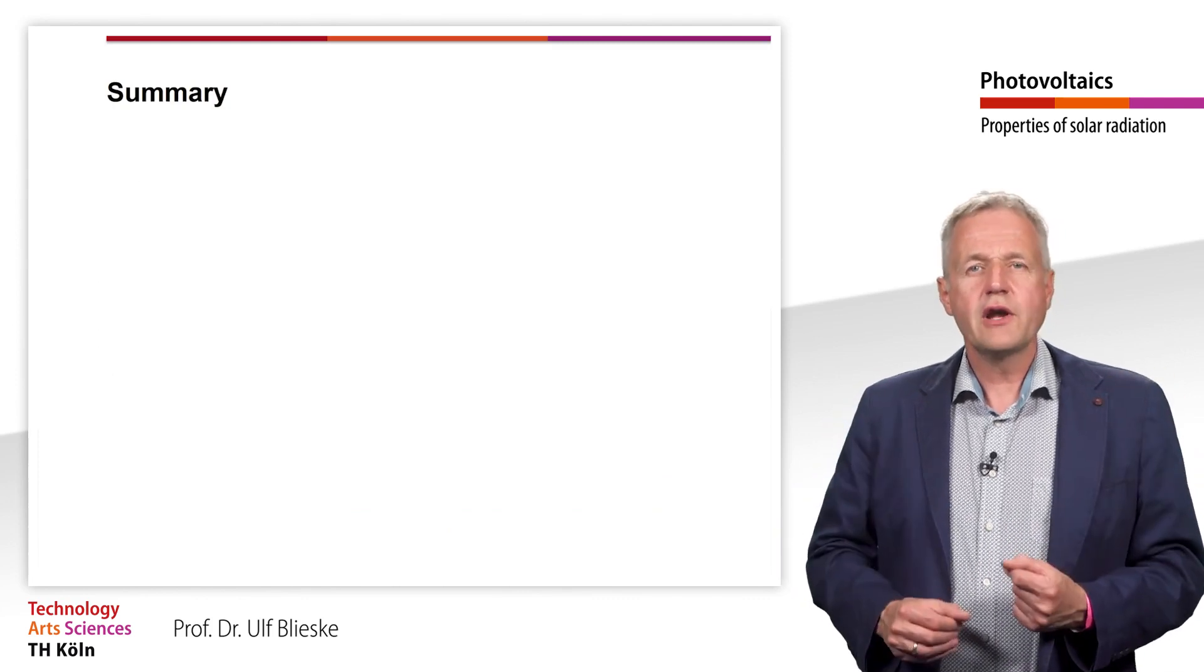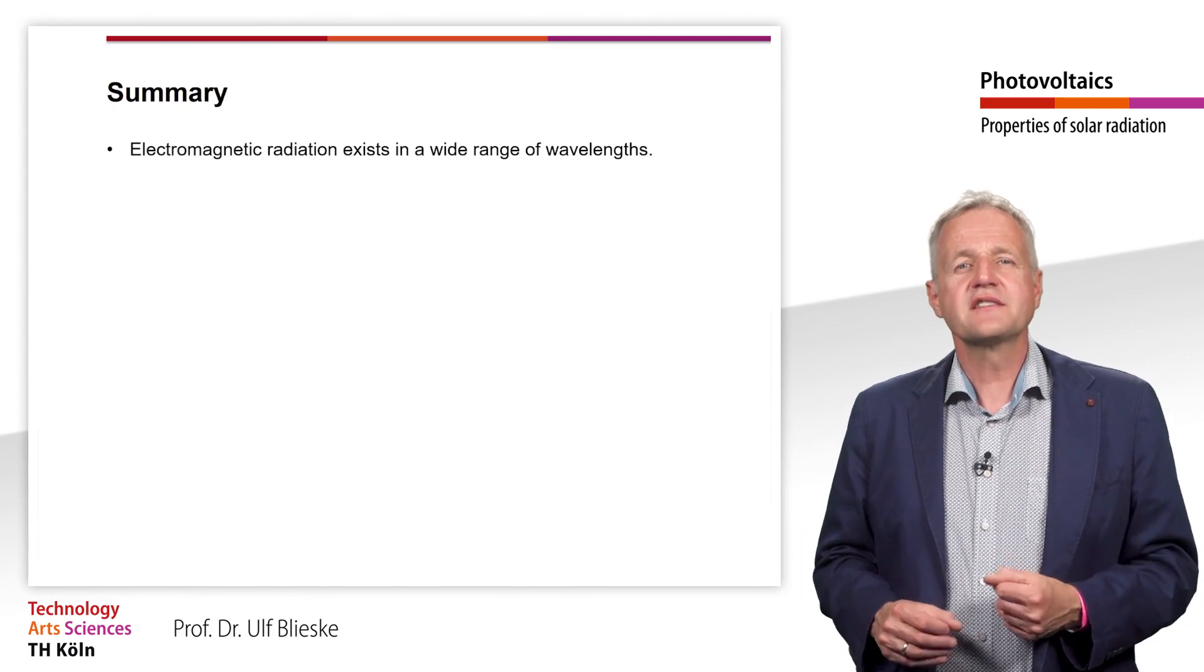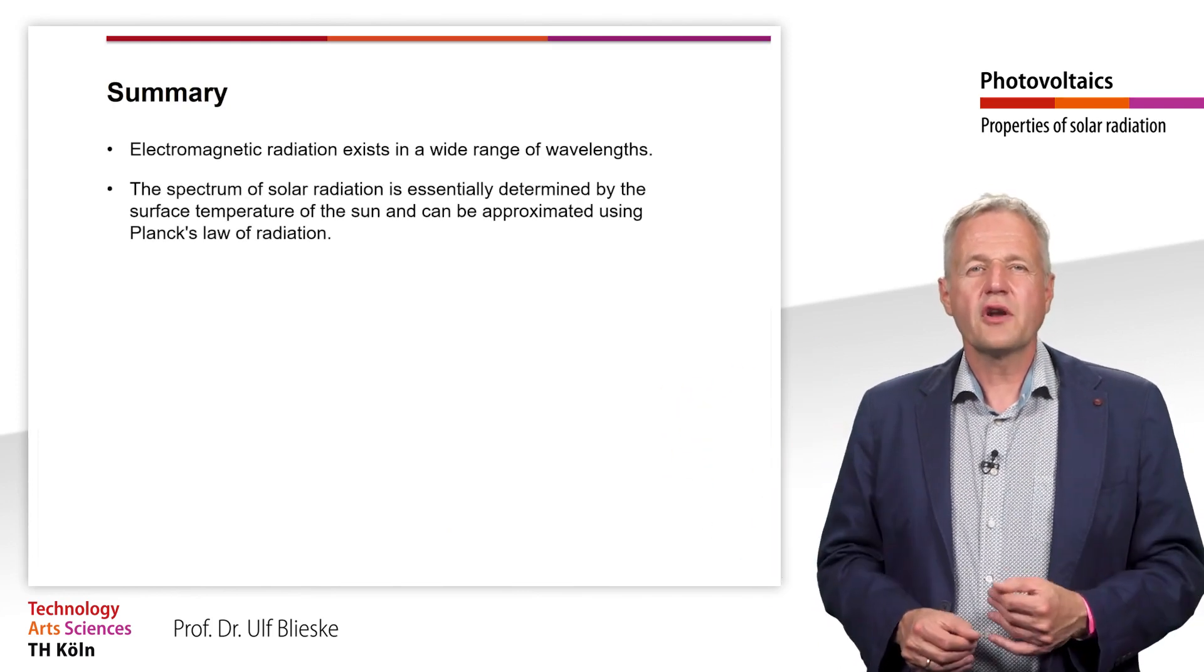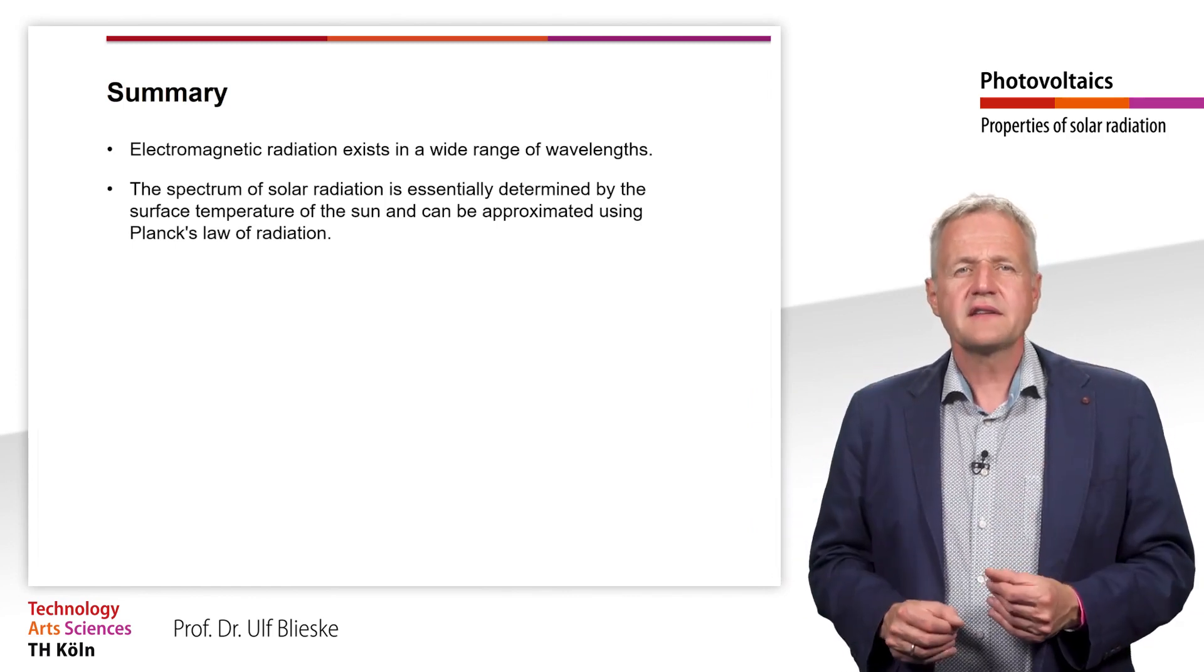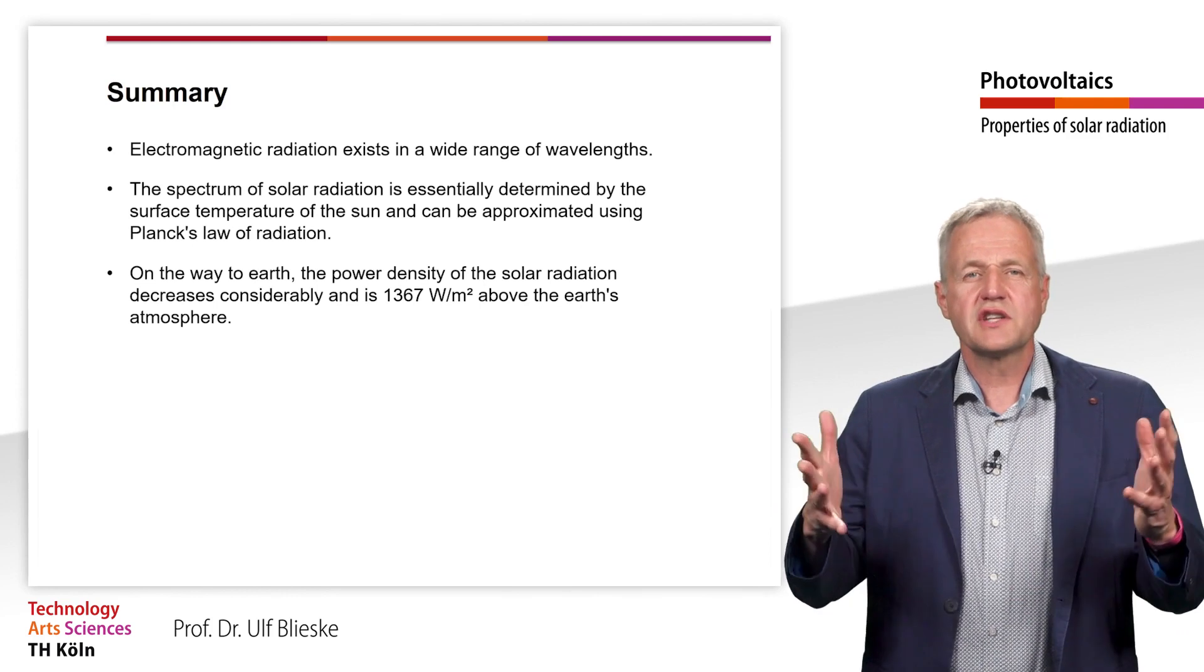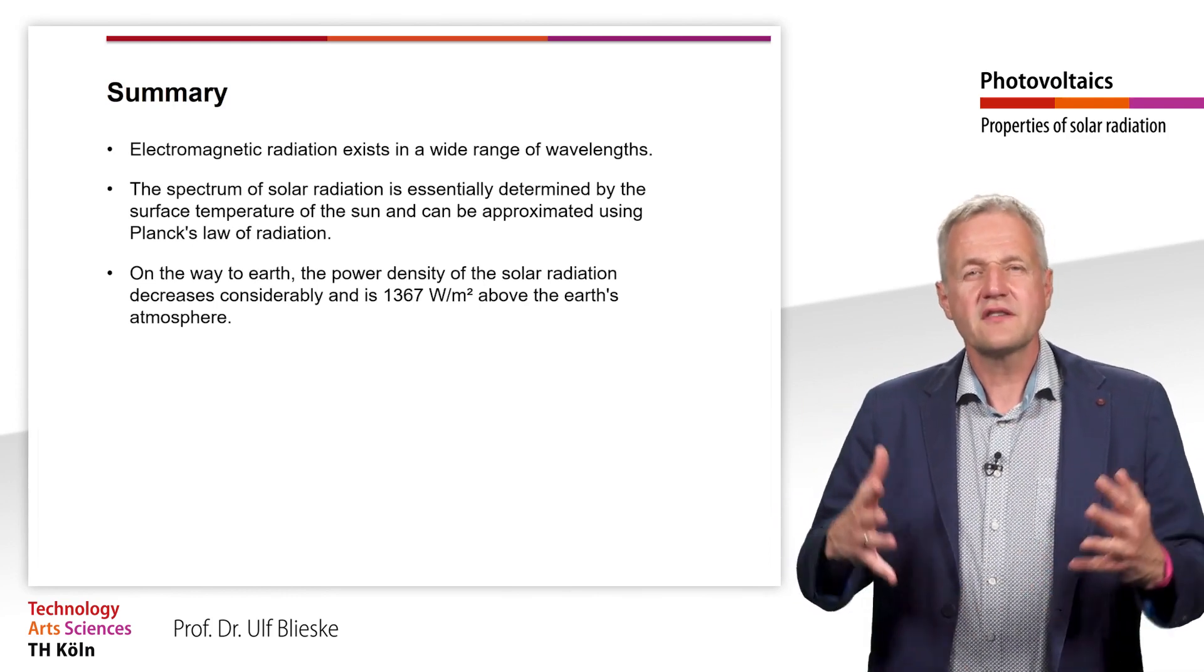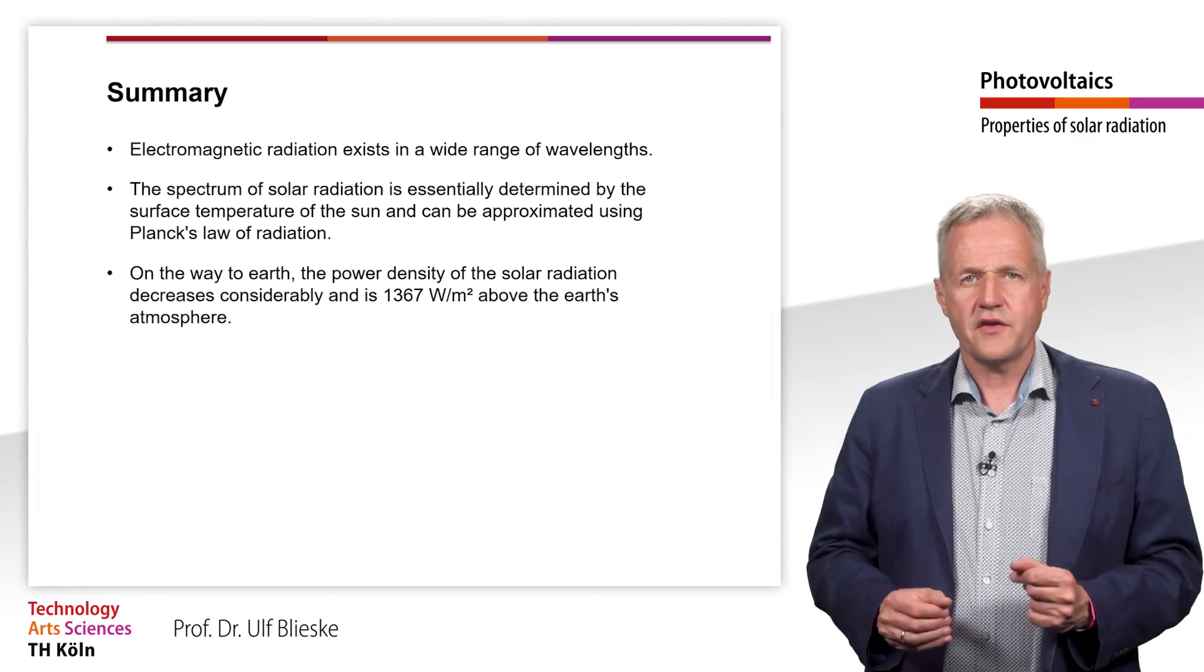So, what have we learned so far? First of all, electromagnetic radiation exists in a wide spectrum of wavelengths. The spectrum of solar radiation is mainly determined by the surface temperature of the sun and can be approximated by Planck's law of radiation. On the way to the earth, the power density of the solar radiation decreases considerably and is 1367 W per square meter above the earth's atmosphere.